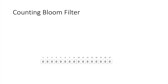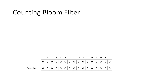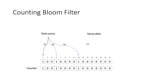In a counting bloom filter, along with the bit array we also maintain a counter. When we store user data.savvy, whatever bits we set, we also increase the counter for those respective bits. So for bit 4 we set the counter to 1, and for bit 10 we set the counter to 1. Now when we store savvy.data, h1 points to bit 10, so we increase the counter of bit 10 to 2 — it was 1 before.